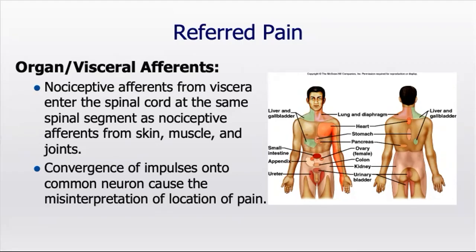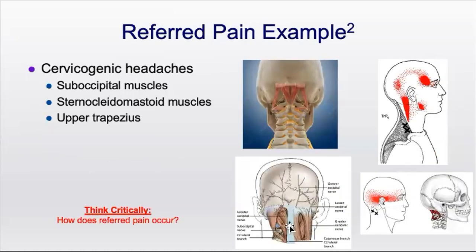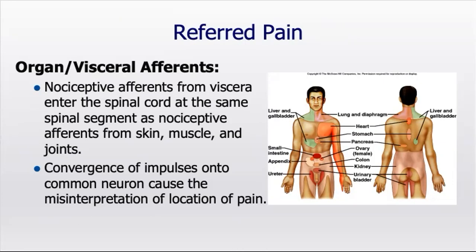The reason referred pain occurs is that the nociceptive afferents from viscera enter the spinal cord at the same spinal segmental level as nociceptive afferents from the skin, muscle, and joints. This convergence of neurological impulses onto a common nerve can be misrepresented as coming from a different area. Additionally, the greater and lesser occipital nerves travel through the suboccipitals, so if those muscles are very tight, they can compress those nerves and cause referral pain into the back of the skull. These referral patterns follow typical, clinically predictable paths that can help us be more accurate in diagnosis.